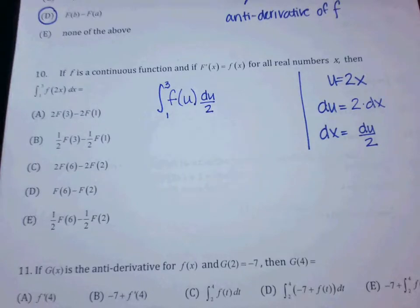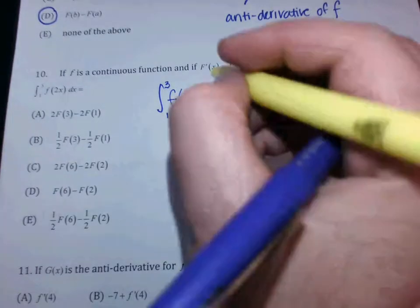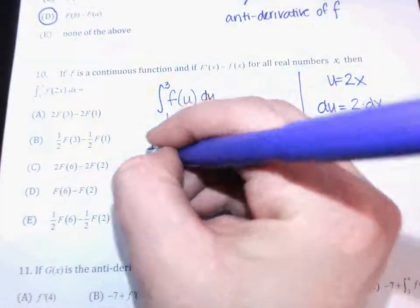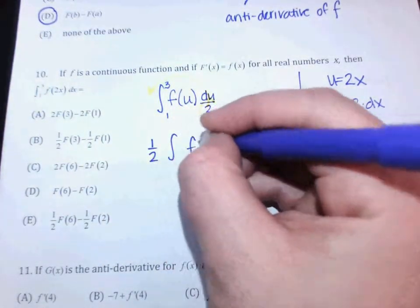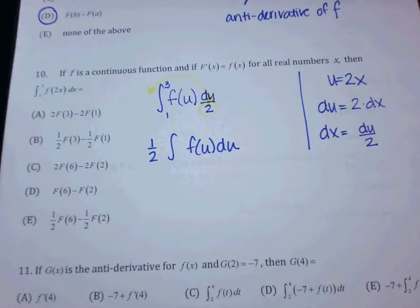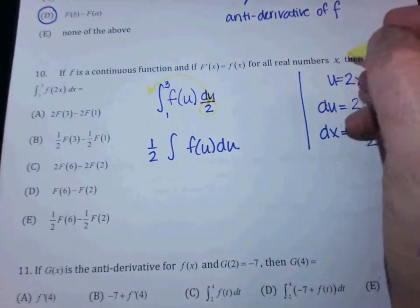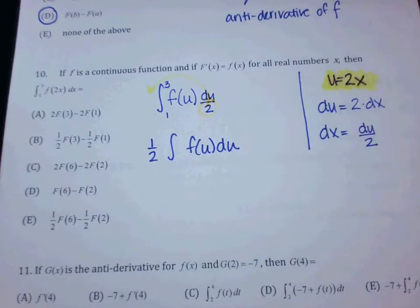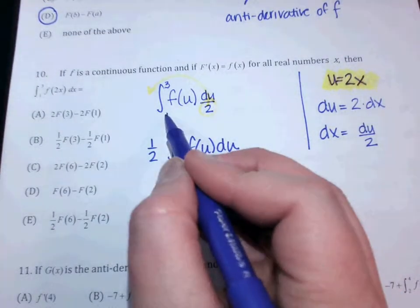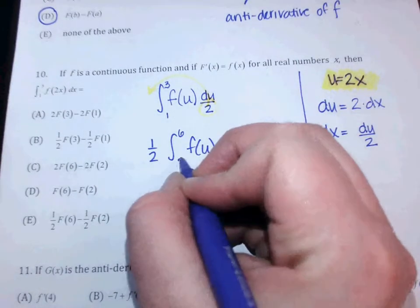From here, where can I take the 2? It's going to be a half. So it's one half times the integral of F of U DU. And the endpoints 1 and 3 — do they stay? No, you've got to change them. You get 6 and 2. Remember, you take your old endpoints and plug them into U. If U is 2X, when I plug in 3, 2 times 3 is 6 on top. When I plug in 1, 2 times 1 is 2 on bottom.